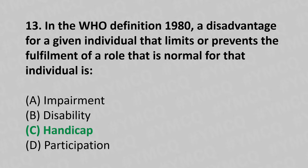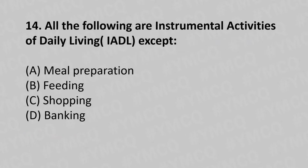Moving to our fourteenth question. All of the following are instrumental activities of daily living except: Option A, meal preparation. Option B, feeding. Option C, shopping. Option D, banking. And the answer is Option B, feeding.